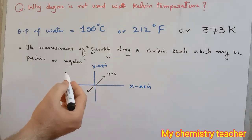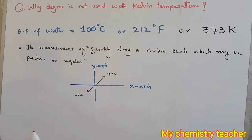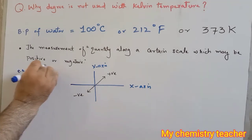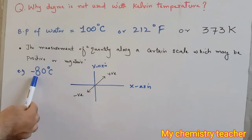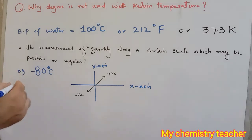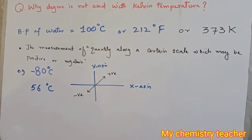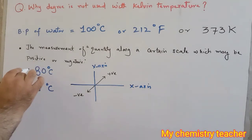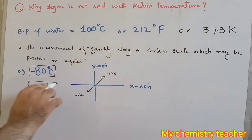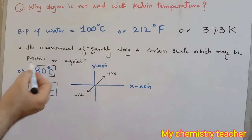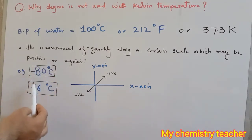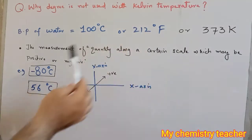Similarly, if you are representing temperature in Celsius or Fahrenheit scale it can have negative as well as positive values. For example, the coldest region of the world like Antarctica can have a lowest temperature of minus 80 degrees, and the hottest place in the world can have a temperature as high as 56 degrees Celsius. So degree Celsius has values in both negative and positive, just like angles.